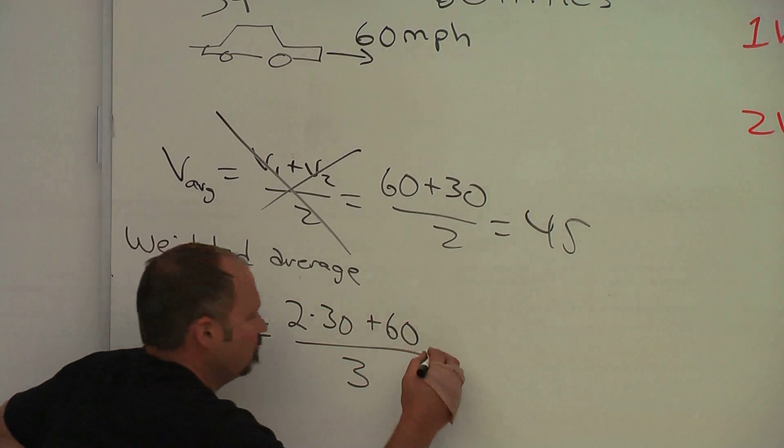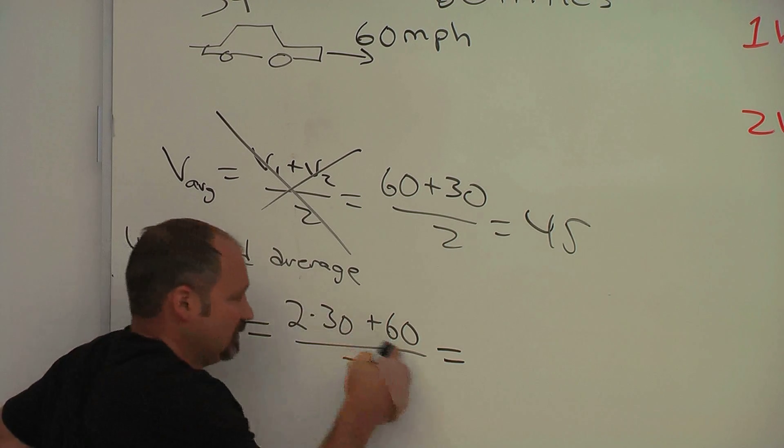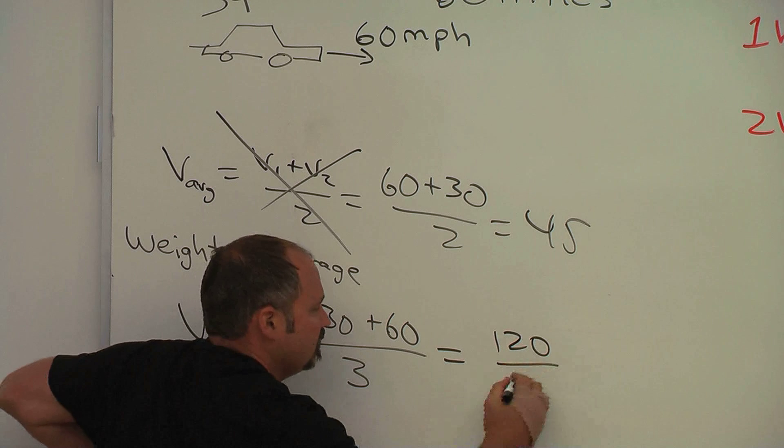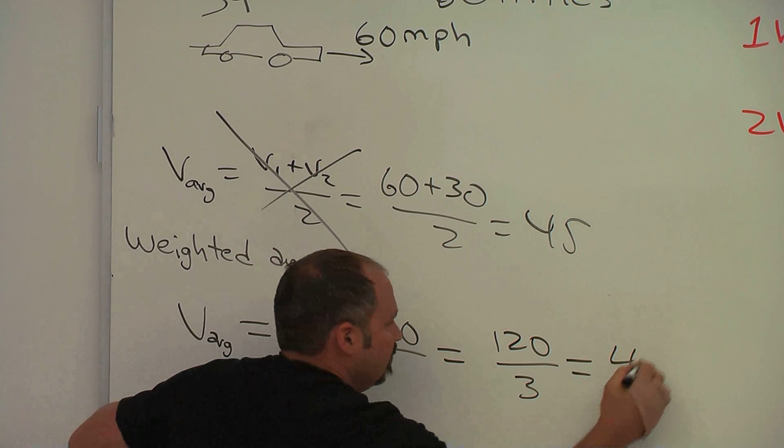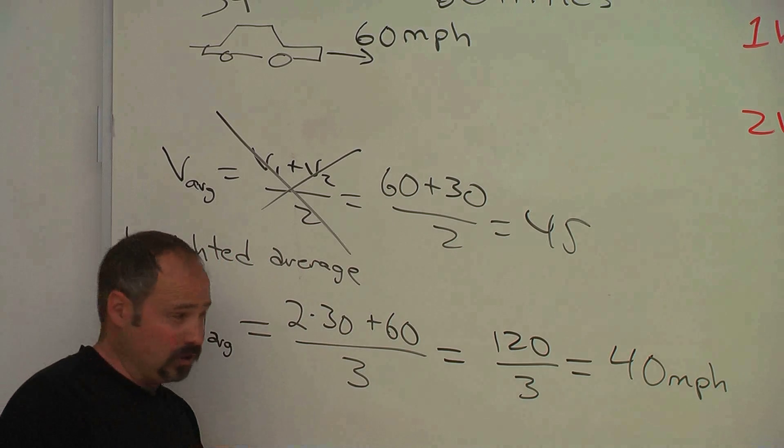And if you do that, well, you get 2 times 30 is 60, and then 60 plus 60 is 120, divided by 3, 40 miles per hour. Much closer to the 30 than to the 60.